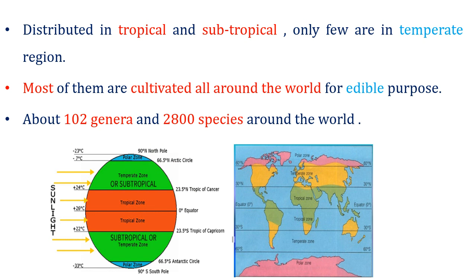Family Solanaceae is distributed in tropical and subtropical regions of the world, and only few members are present in the temperate region. You can locate which part of the world belongs to each region in this image. Most members of Solanaceae are cultivated all around the world for edible purposes — tomato, potato, brinjal, chili. About 102 genera and 2800 species are reported from this family.